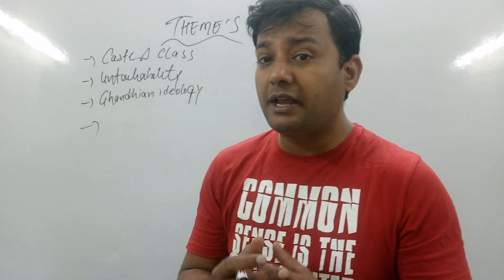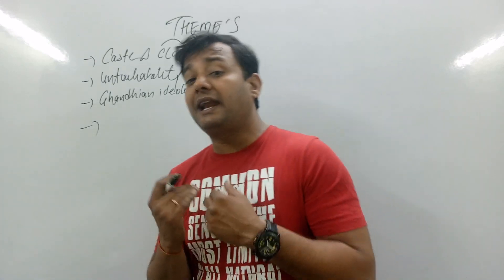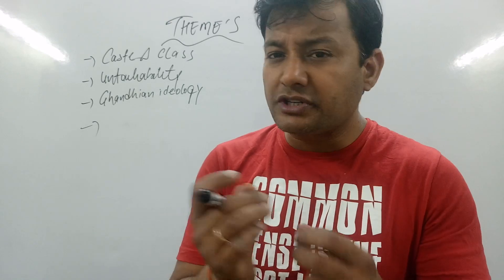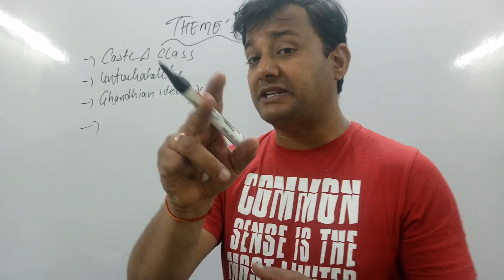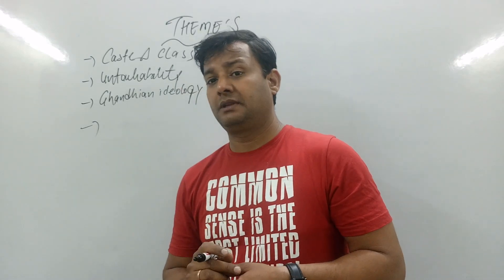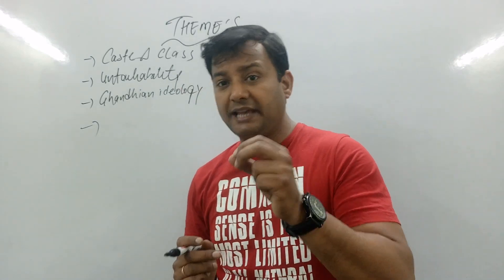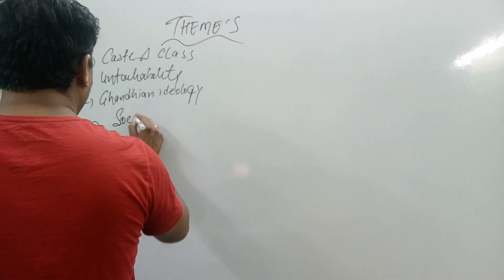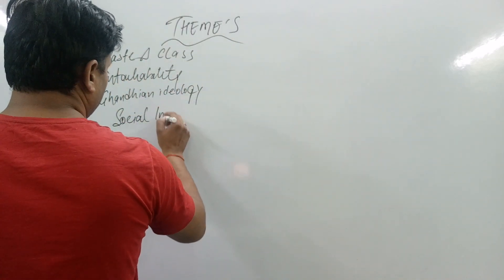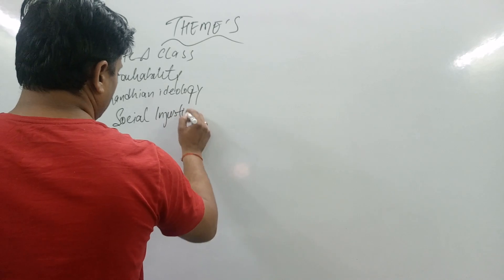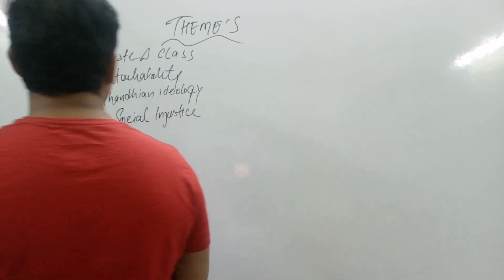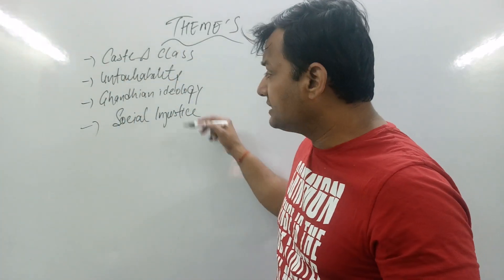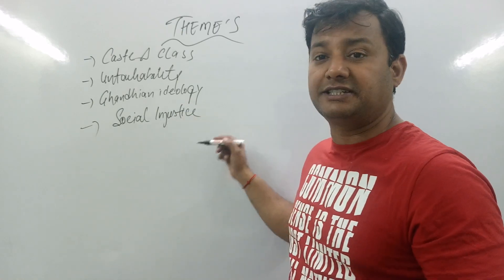One more theme is social injustice, especially towards women. So the four main themes of Kanthapura are: caste and class, untouchability, Gandhi's influence and ideology, and social injustice towards women.